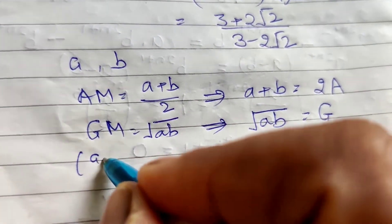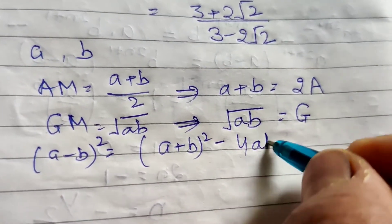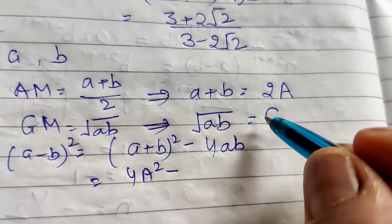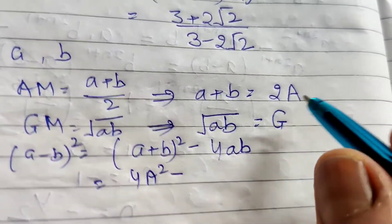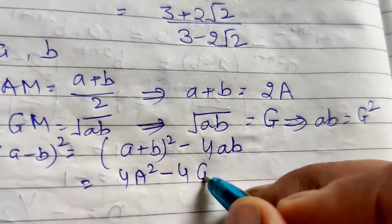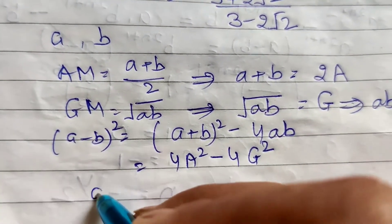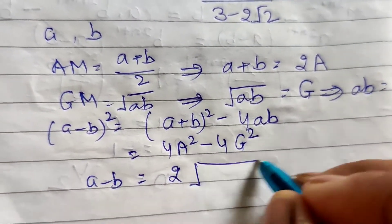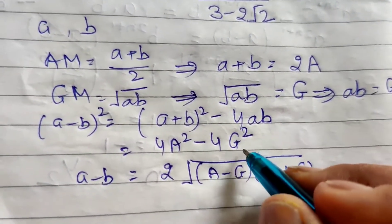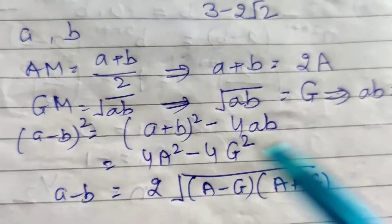We can find (a - b)² using (a + b)² - 4ab. Here (a + b)² equals 4A², and 4ab equals 4G² (since ab = G²). So (a - b)² = 4A² - 4G².